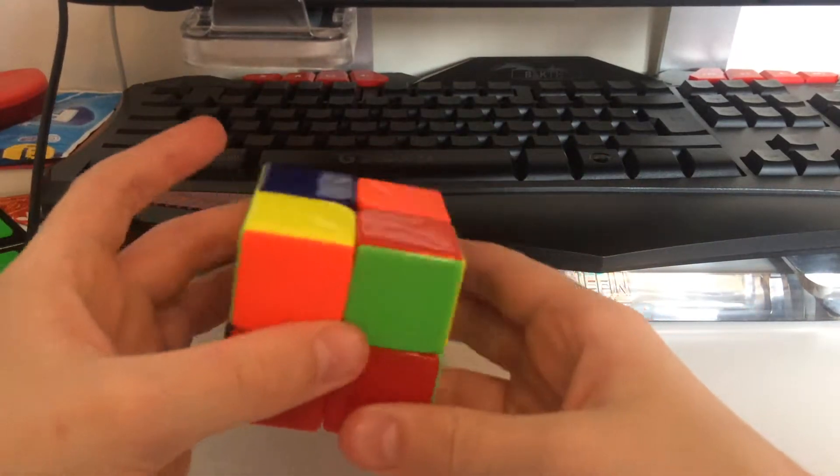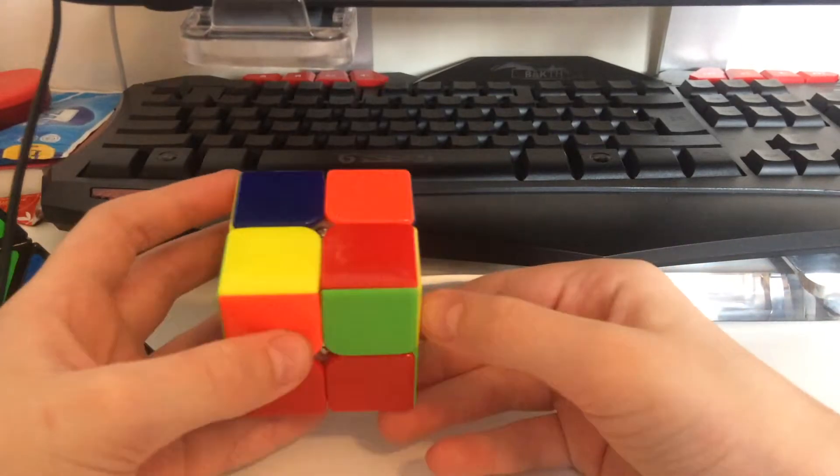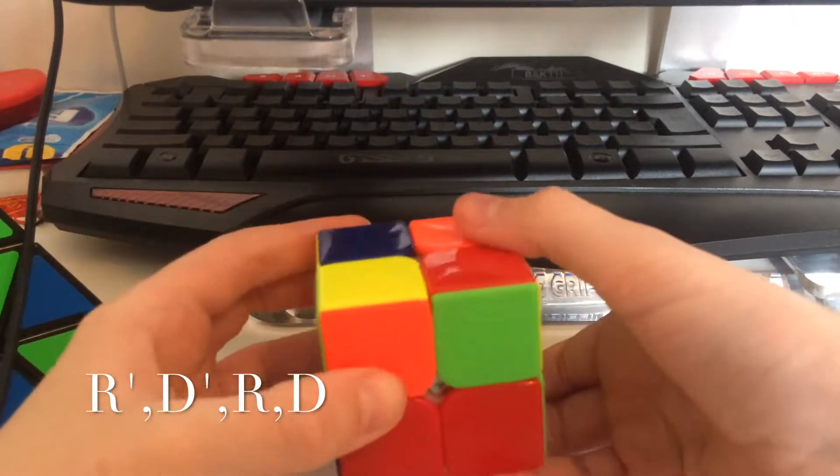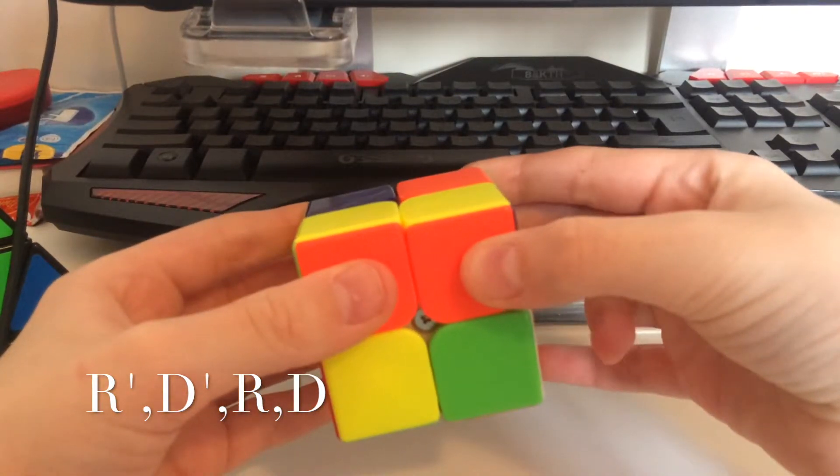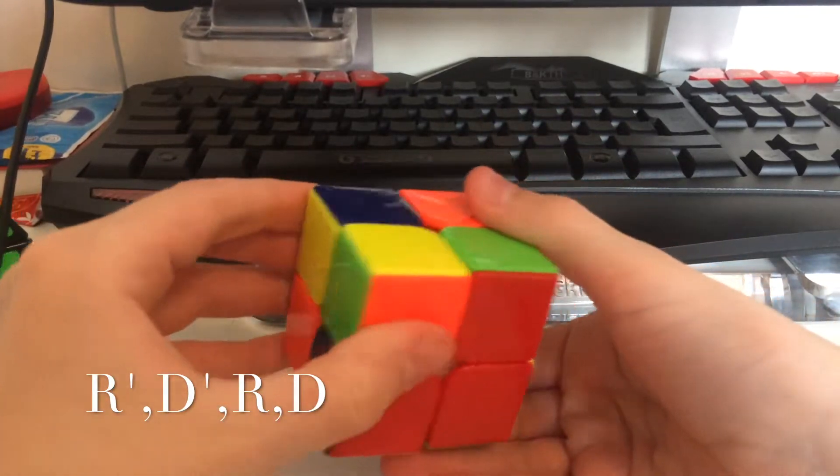Now the second step is very simple. There's just one algorithm you need to learn. It's down, across, up, across. I'll put it on the screen.